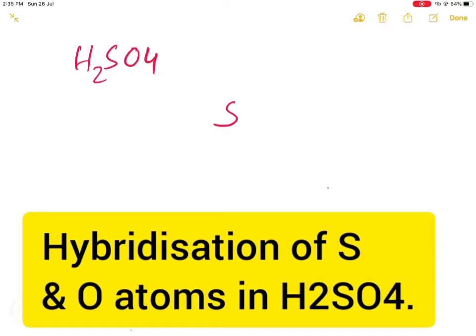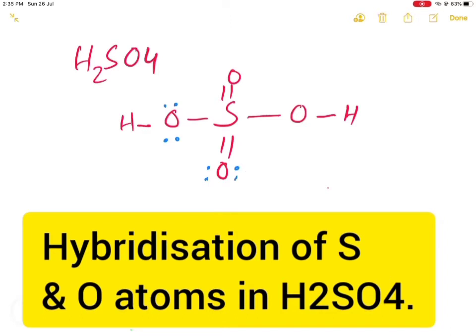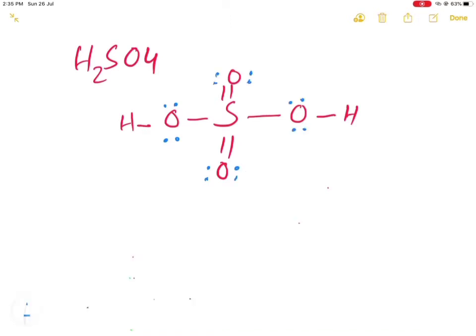Sulfur is present in the middle and four oxygen atoms are written on four different sides as shown on the screen. Each oxygen has two lone pairs. Let us find the type of hybridization of these four oxygen atoms and the sulfur atom present in the molecule.